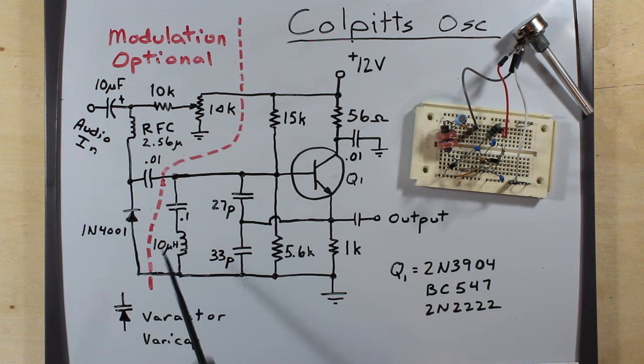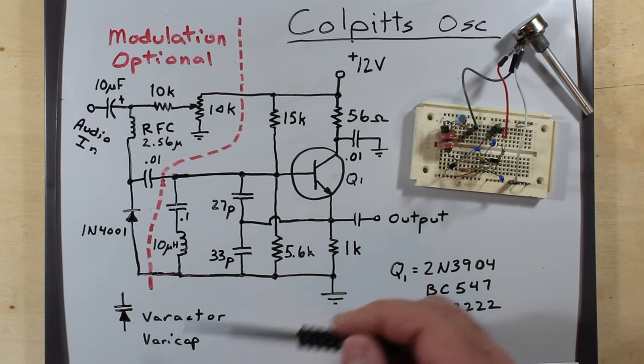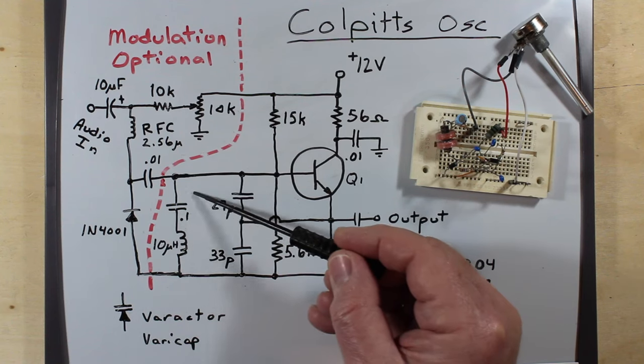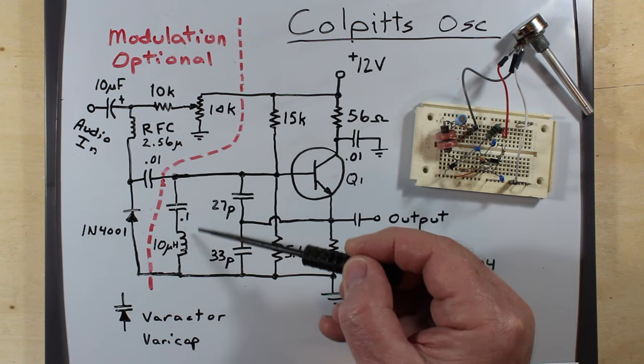The varicap, which I imagine probably everybody doesn't have, and this is what provides that very small amount of changing capacitance that is coupled across this tank circuit.